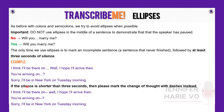If the silence is shorter than three seconds for an incomplete sentence, mark the change of thought with double dashes instead. For example: "I think I'll be there on-- well, I hope I'll arrive then. You're arriving on-- sorry, I'll be in New York on Tuesday morning." With double dashes we use a lowercase letter, almost as if it's one sentence. However, if it's an incomplete sentence with at least three seconds of silence, you start a new sentence with a capital letter. Study the difference between these two carefully.